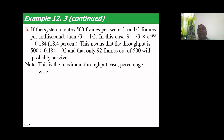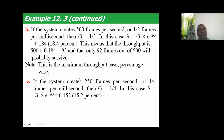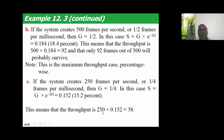For the third case, only 250 frames per second are sent, which is one-fourth of a frame per millisecond, so G = 1/4. Then S = (1/4) × e^(−0.5), which gives 15.2%. So roughly 38 out of 250 frames reach the destination, and 212 packets do not.